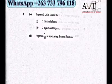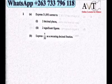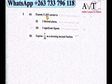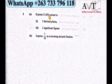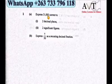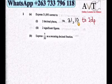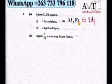Question 2a: Round 31.095 to 2 decimal places. We count 2 decimal places, then look at the next digit — 5 or more affects the number. The 9 becomes 10, which carries over. The answer is 31.10. Note there must be two decimal places even if the last digit is a zero.